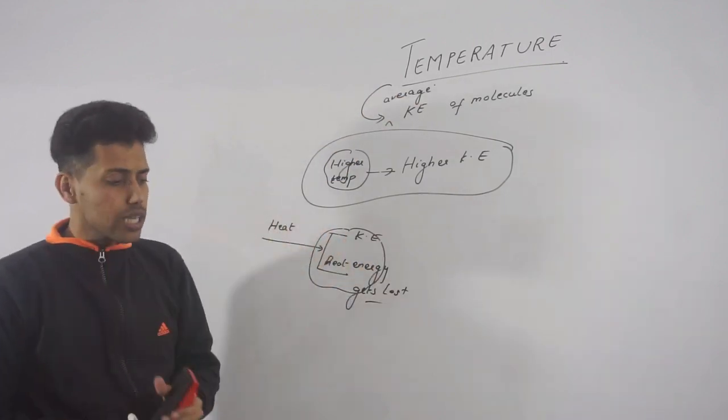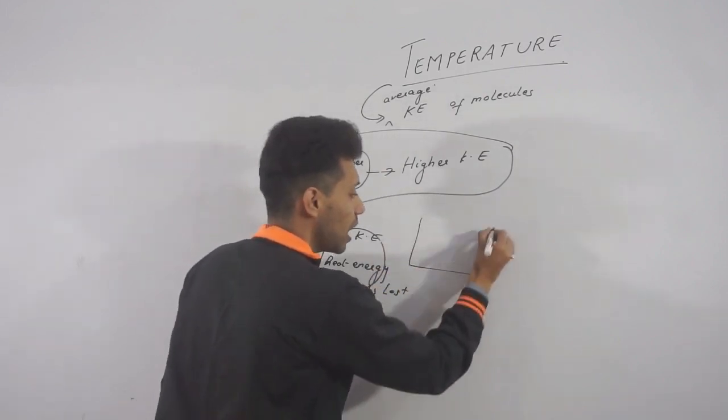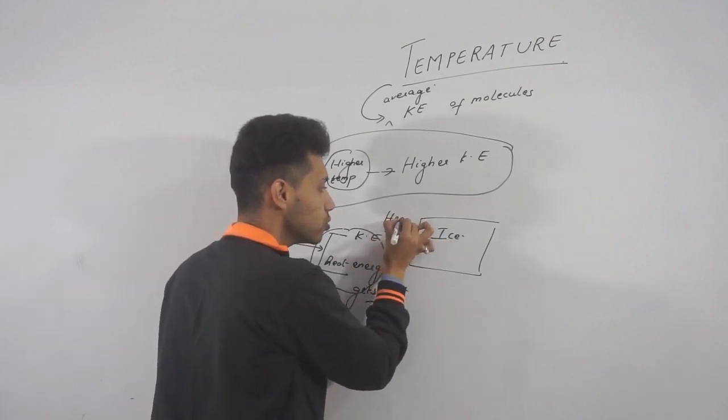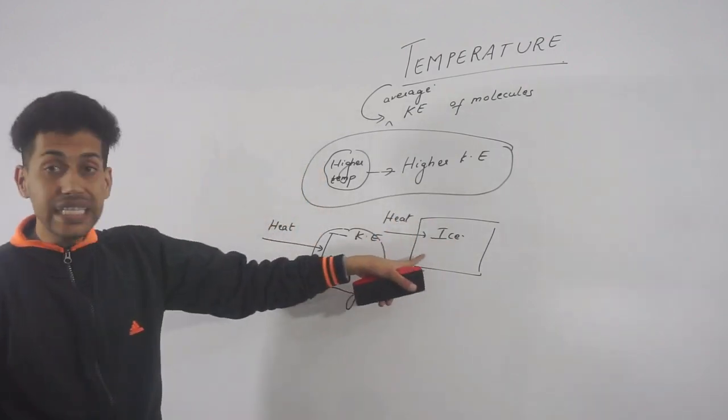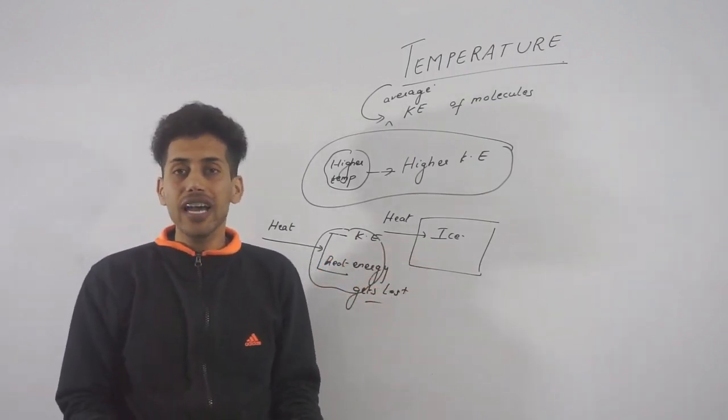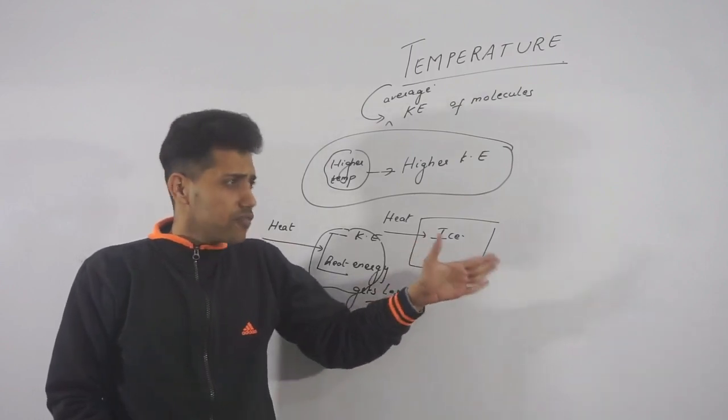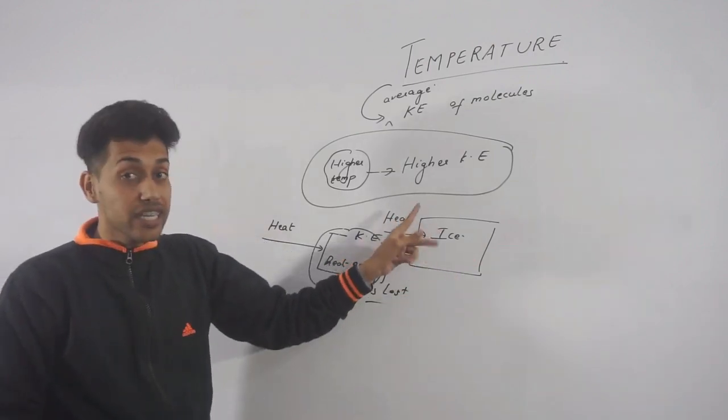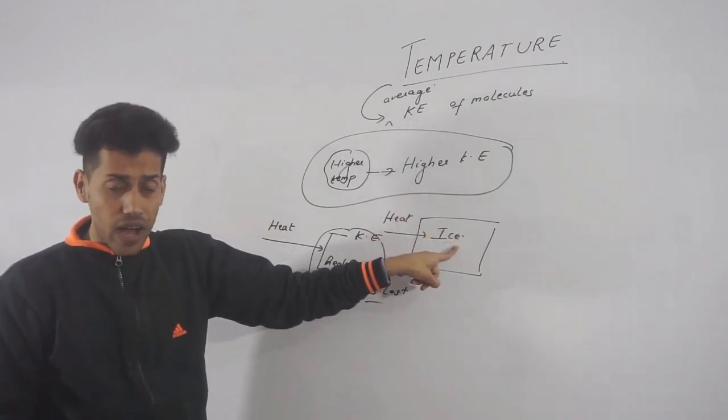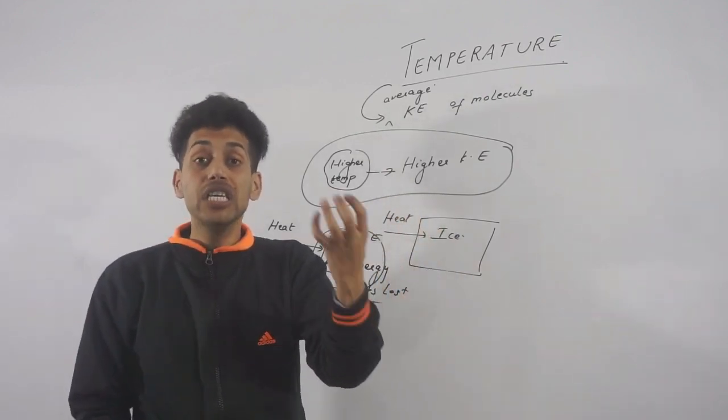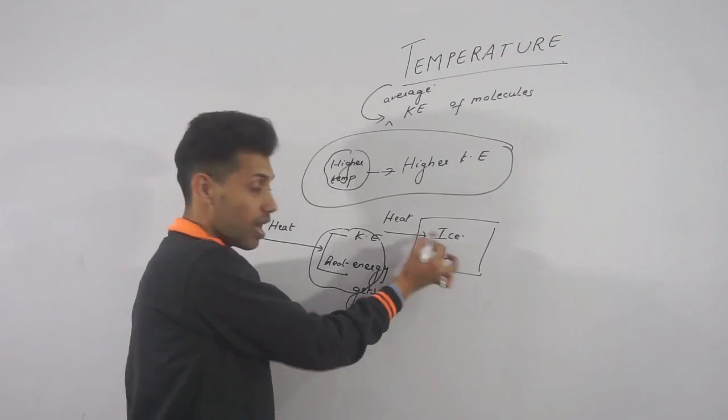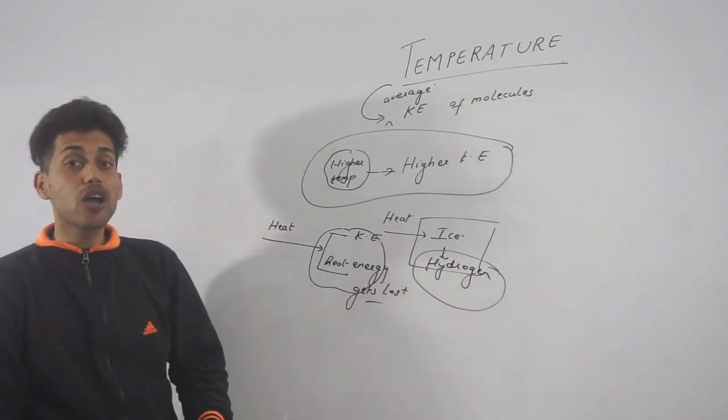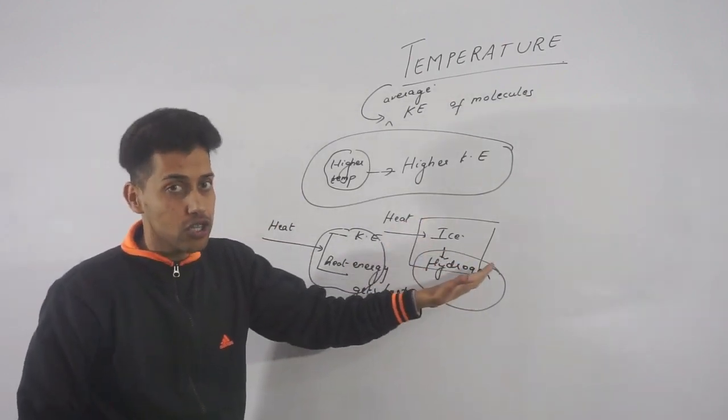Suppose I just give you an example. Suppose you have ice, and you supply heat energy to ice. But you know, when you supply heat energy to ice, temperature does not rise. It doesn't rise exponentially. After some time it rises, then whole ice gets converted into water. So that heat is not getting converted into kinetic energy in the case of ice. First, that heat will break the hydrogen bonds which are present inside the ice. Once all the hydrogen bonds are broken,